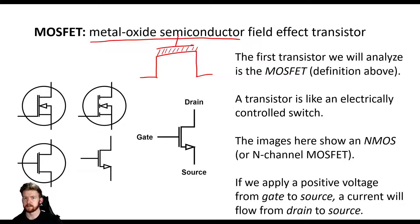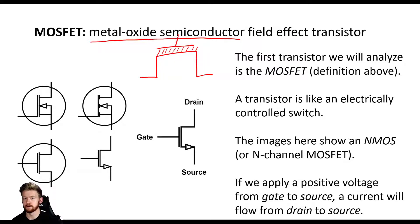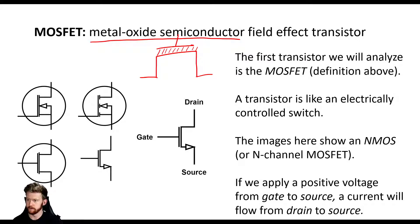That metal oxide is not conductive, so it ensures that not a lot of current flows through. Very little current ever flows into the gate of a MOSFET. That's where it gets its name: metal oxide semiconductor field effect transistor.